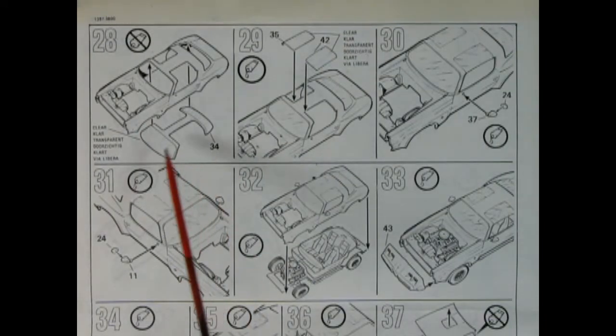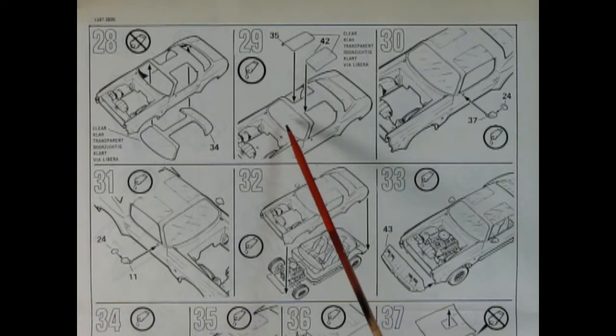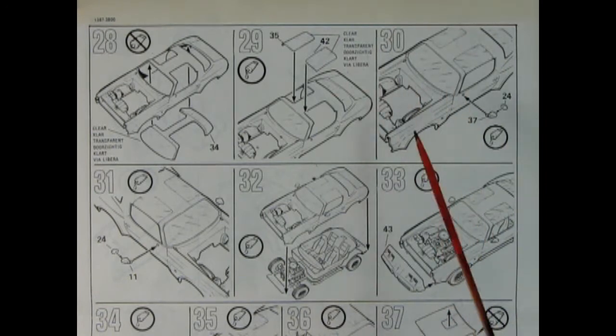Panel 28 shows our glass going in from underneath. Panel 29 shows our T-tops being put in place which you do not glue. Here we have our side mirrors in panel 30.